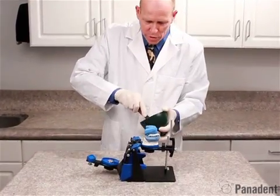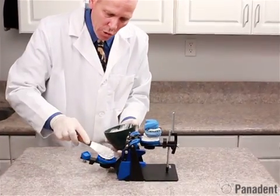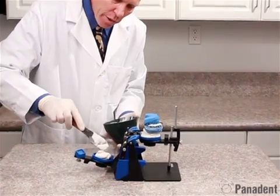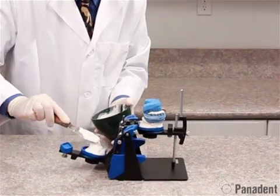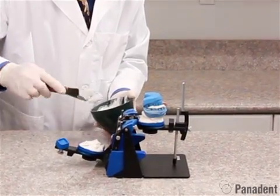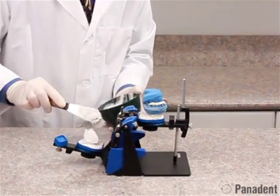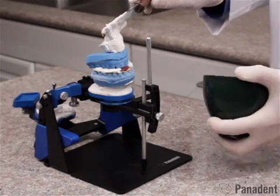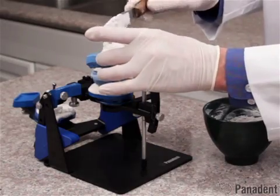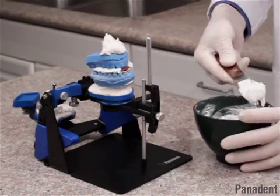We've mixed the plaster and we first want to add some plaster to our lower mounting plate. Make sure we get it around the center retention lug really well. And we want to go ahead and fill that mounting plate up because we have retention lugs around the lateral edges. And so we'll add some plaster to that and then we'll add a little plaster to our model.